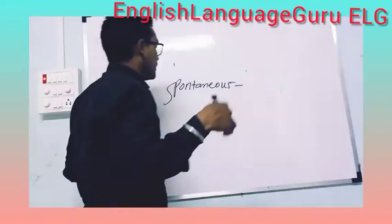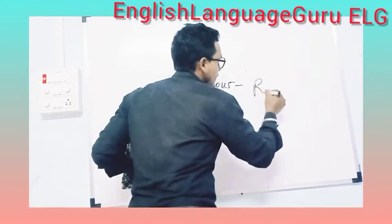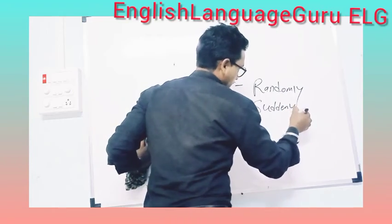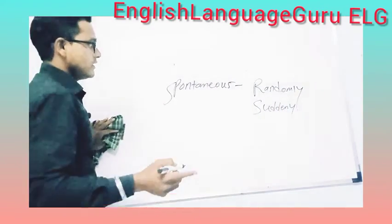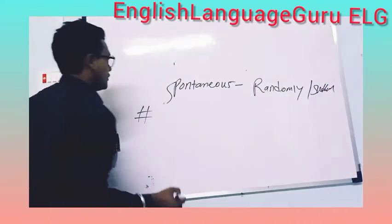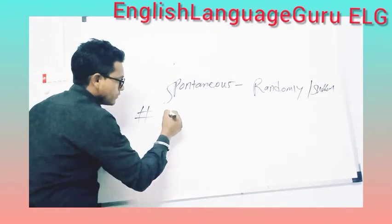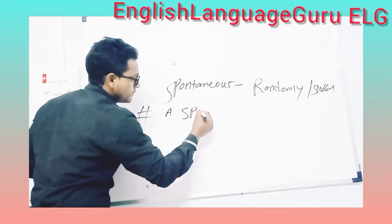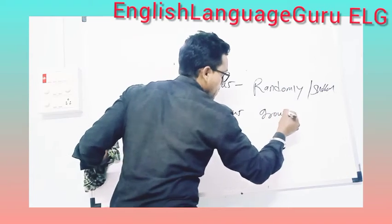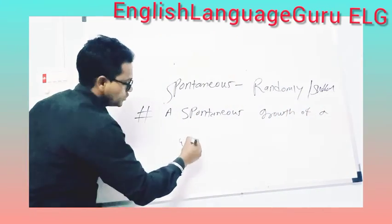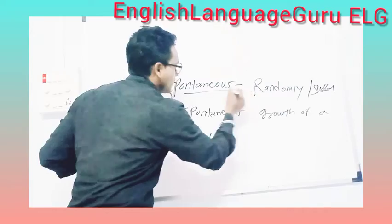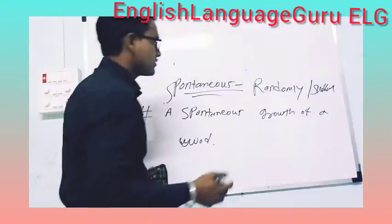The next word can be used to say 'randomly' or 'a sudden.' The synonym is 'spontaneous.' With an example: a spontaneous growth of a wood — try to understand what I mean. Don't worry about the spelling being wrong or right.